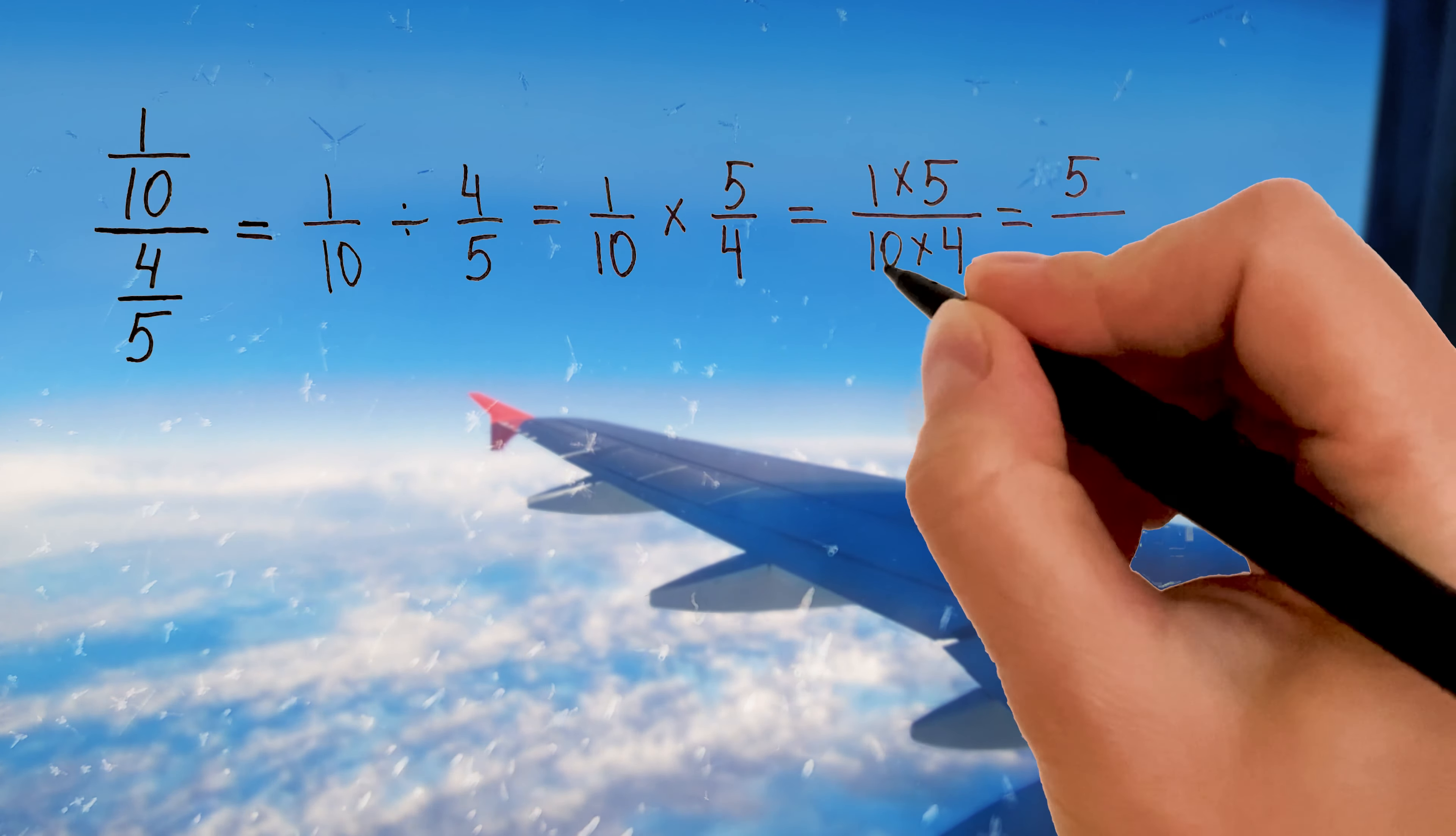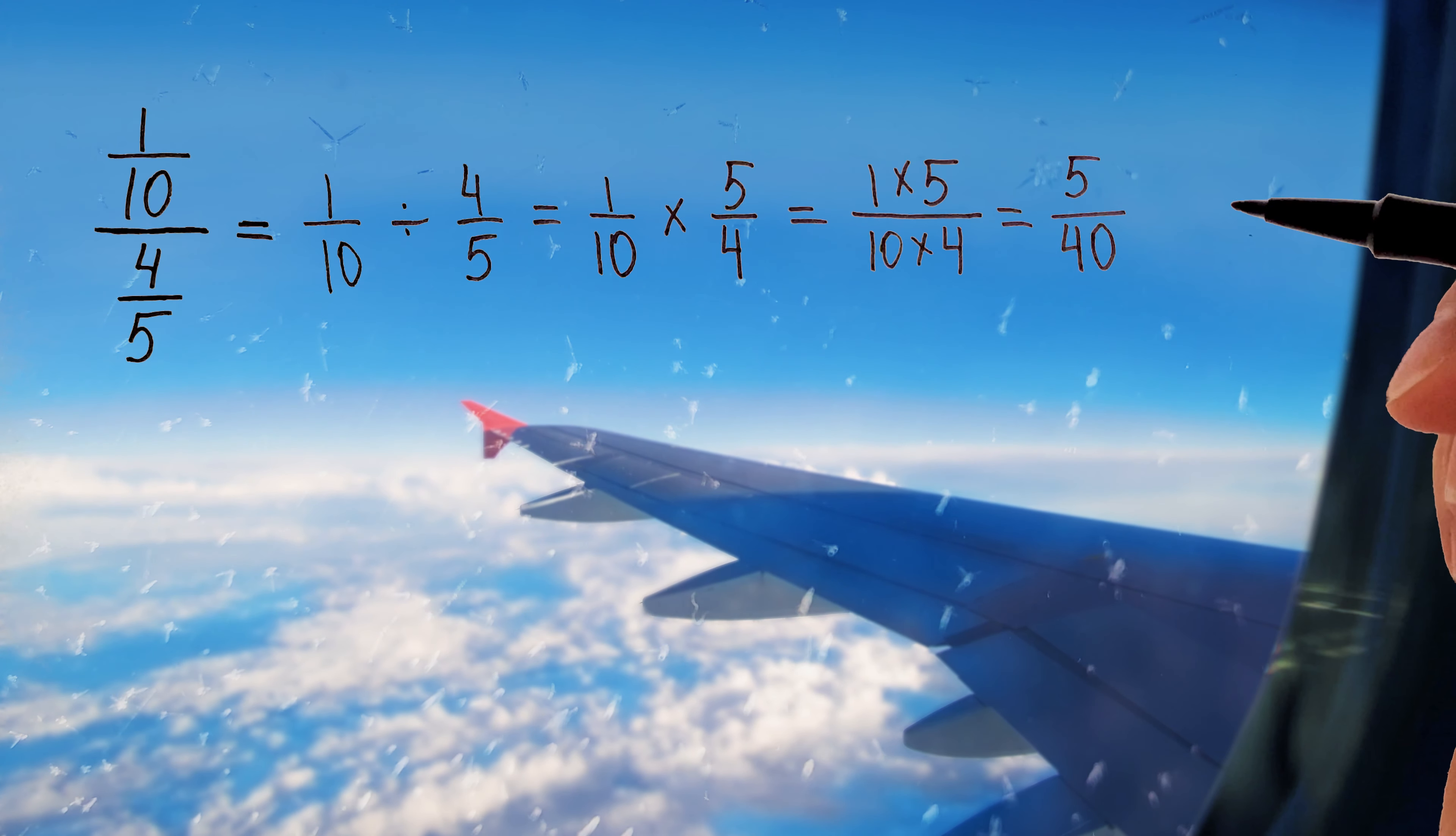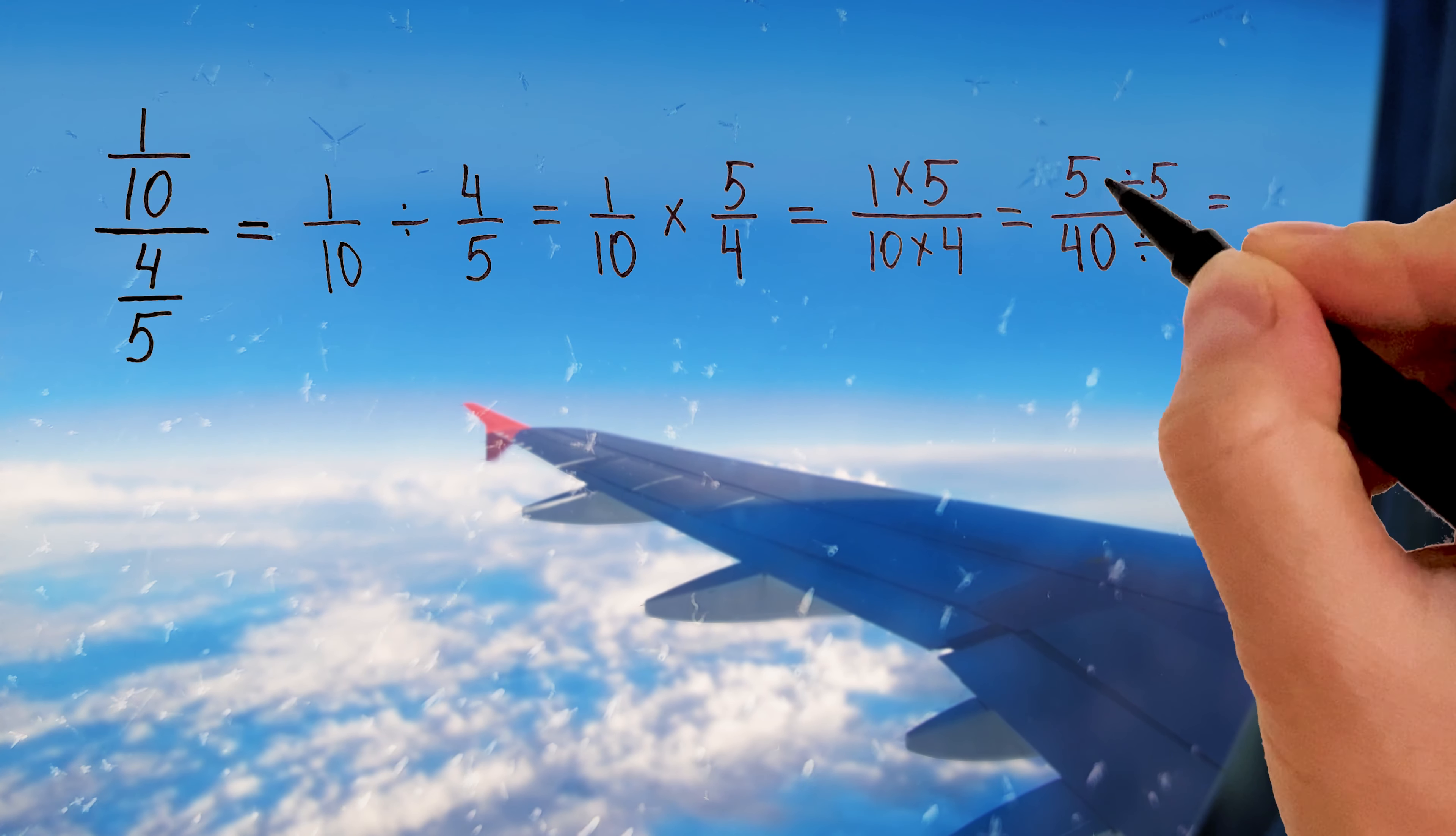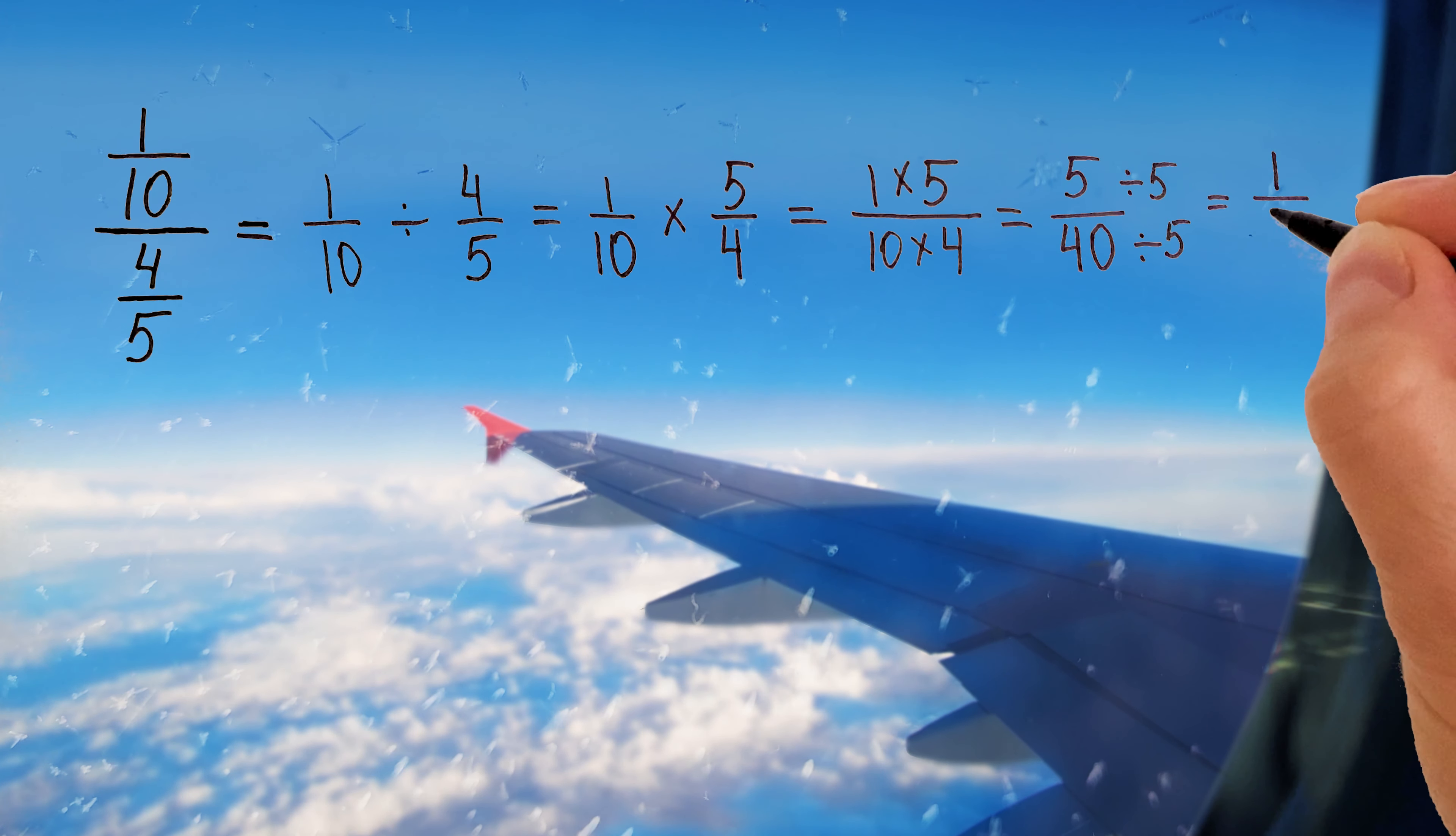When you divide fractions, keep the first fraction the same. So one-tenth. Change division into multiplication and then flip over the second fraction. You have four over five. Flip it over and you will have five over four.